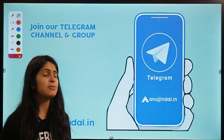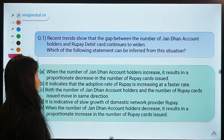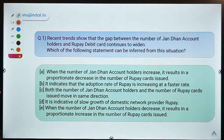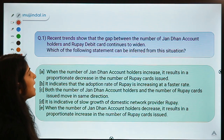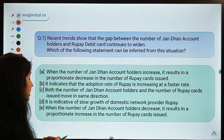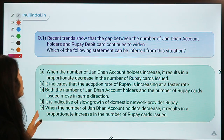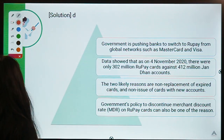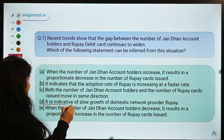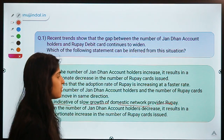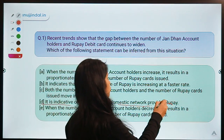Here is your first question for today. It says: recent trends show that the gap between the number of Jan Dhan account holders and RuPay debit card holders continues to widen. Which of the following can be inferred from this situation? The correct option is option D.